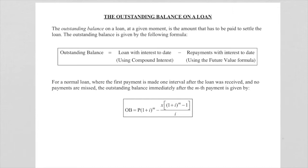So all the payments made to date, and there we use the future value annuity formula. So in terms of symbols, this outstanding balance will be P(1+i)^m minus x[(1+i)^m - 1]/i. Please take note that this m and that m must be the same. That is the number of payments made.